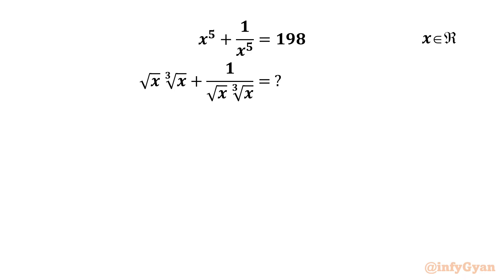Here we have x^5 + 1/x^5 = 198, given that x is a real number. We are asked to find or evaluate the square root of x times the cube root of x, plus 1 over that same product.